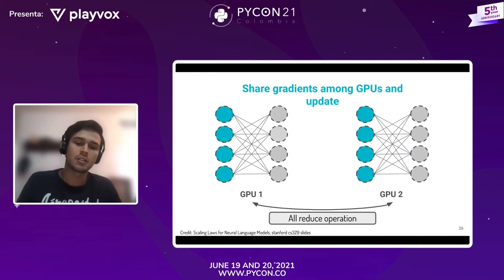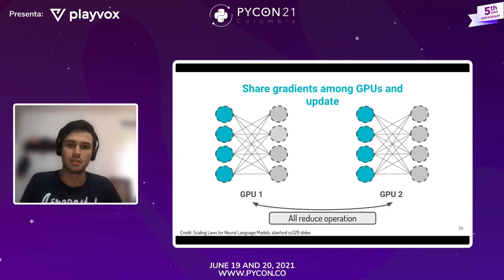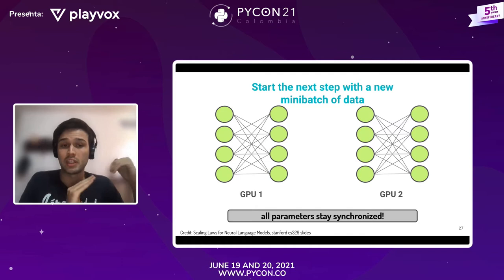Para agregar los gradientes de todas las GPUs hay una operación que se llama all-reduce, y esta se encarga de agregar esos gradientes, hacer un promedio de ellos, y luego utilizarlos para actualizar los modelos. Lo clave de esto es que todos los parámetros se mantienen sincronizados y entonces todos los modelos tienen los mismos pesos antes de empezar cada step de entrenamiento.